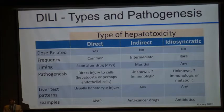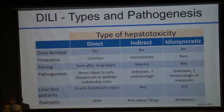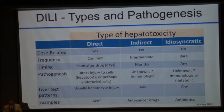There are also direct hepatotoxins — you're all familiar with acetaminophen. Indirect hepatotoxins, such as the anti-cancer drugs you've just been hearing about, are examples of those, and their mechanism is likely immunologic.